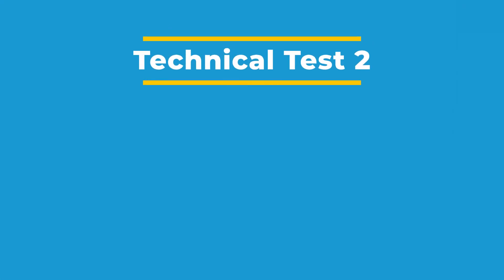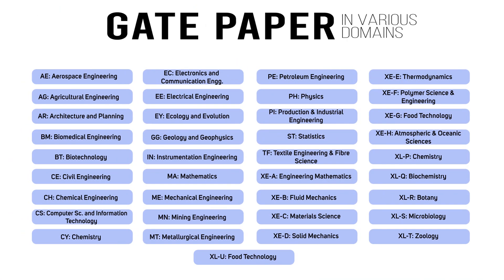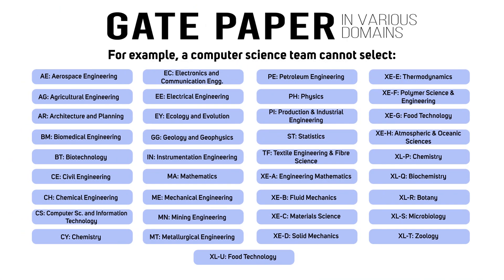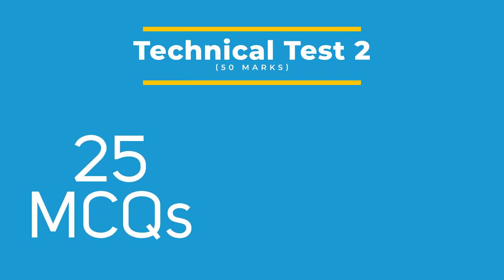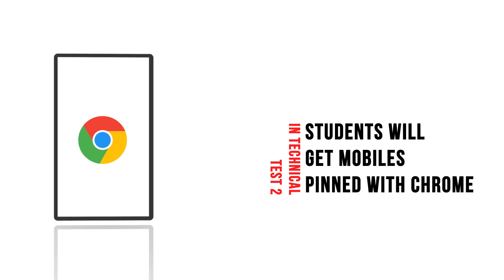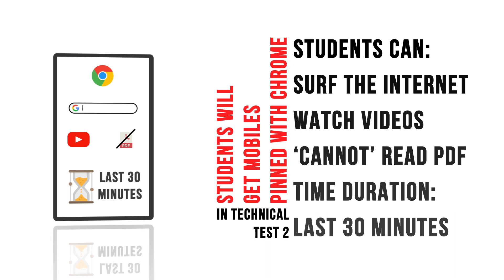Technical Test 2 will be a cross-domain gate-level test based on a domain chosen by the branches. These branches can choose any topic listed, excluding their own domain. This round will also contain 25 MCQ problems to be solved in one hour. After 30 minutes, participants will be allowed to use an Android smartphone and a wired earphone. The screen of Google Chrome will be pinned on the participant's device, and all searches can be made to solve the questions.